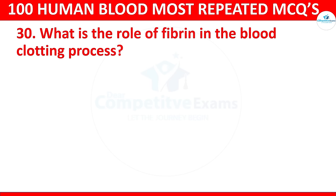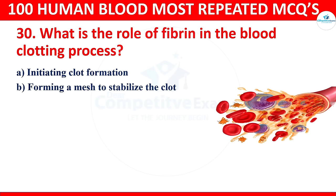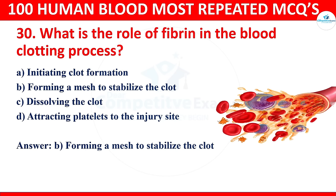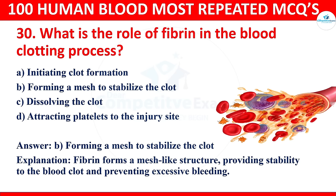Question 30: What is the role of fibrin in the blood clotting process? Options: initiating clot formation, forming a mesh to stabilize the clot, dissolving the clot, or attracting platelets to the injury site. The correct answer is forming a mesh to stabilize the clot. Fibrin forms a mesh-like structure providing stability to the blood clot and preventing excessive bleeding.